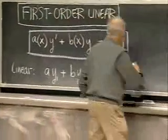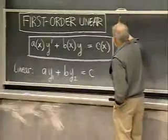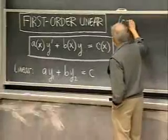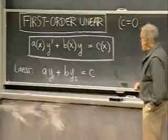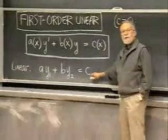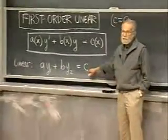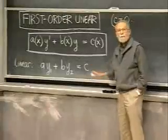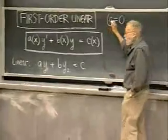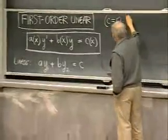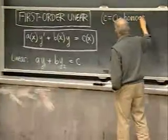A little bit of terminology. If c is equal to zero, it's called homogeneous — the same way this equation is called homogeneous when the right-hand side is zero, as you know from 18.02. That's called homogeneous.